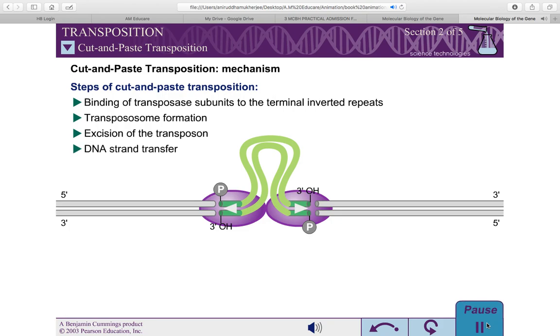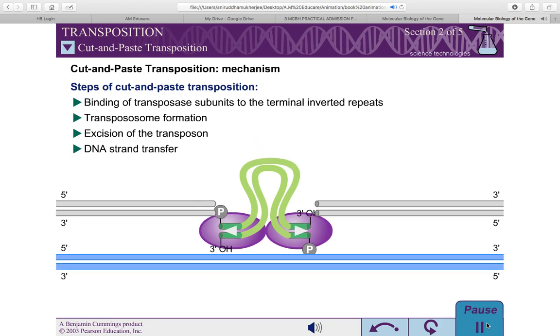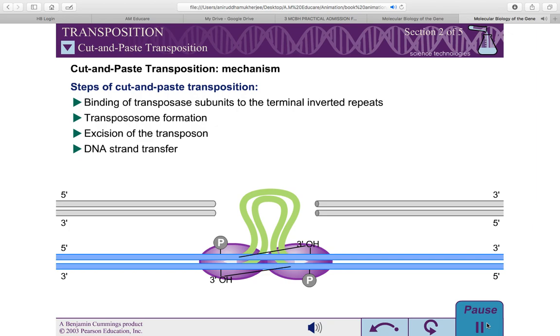The 3' hydroxyls of the transposon DNA then attack the phosphodiester bonds at the target DNA. This reaction is called DNA strand transfer. The sites of attack on the two target strands are usually separated by 2 to 9 nucleotides. This distance is fixed for each type of transposon.